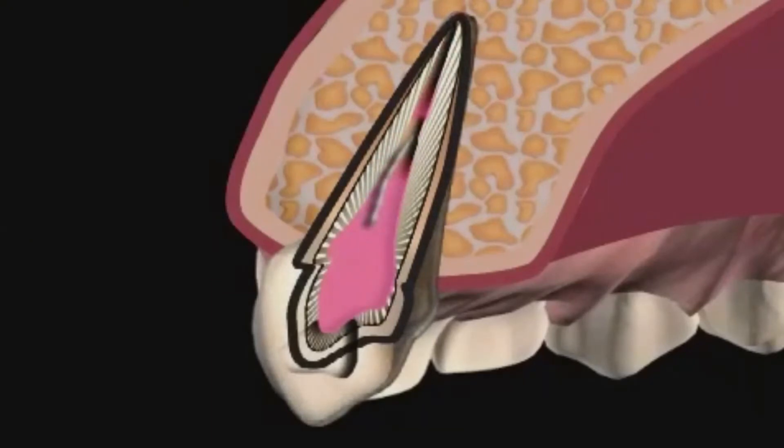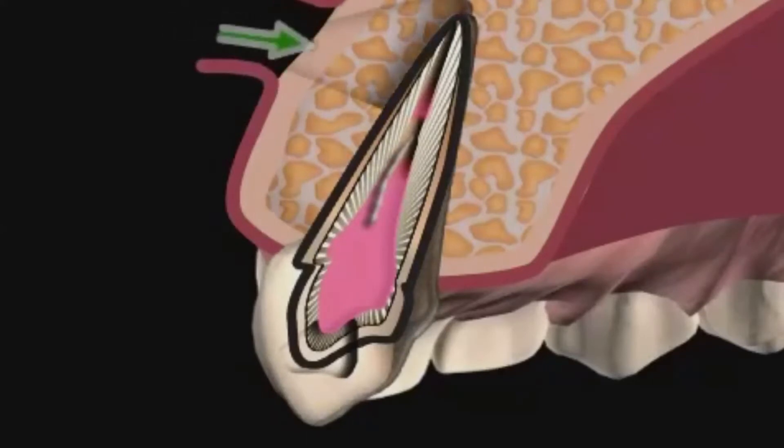Using the retrograde root tip resection, the tooth can be cleaned and sealed from below, meaning from the capped root tip.